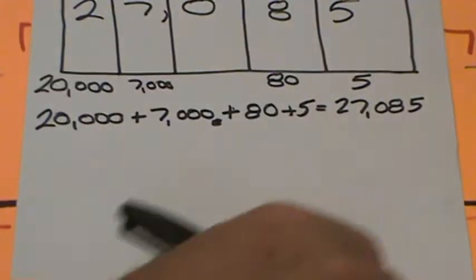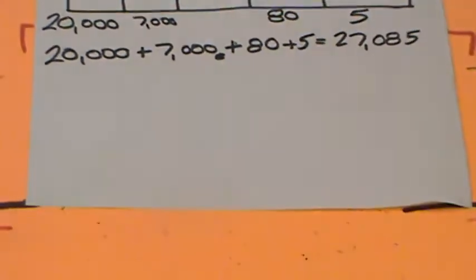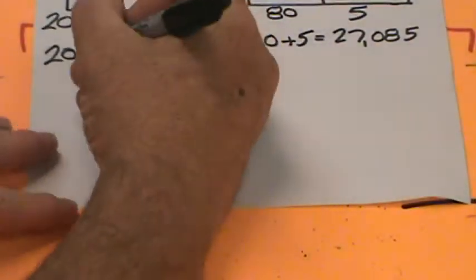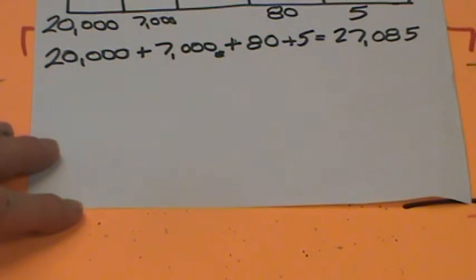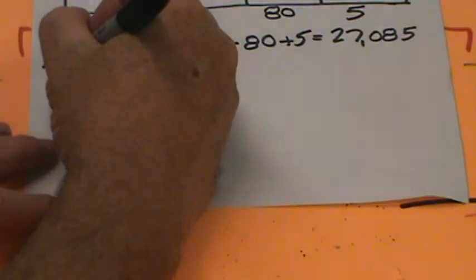Now let's take a look at word form. What could word form be? Well, I might think it would consist of words — and if you thought that, you're absolutely right.